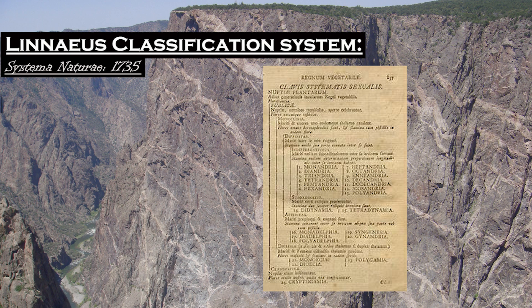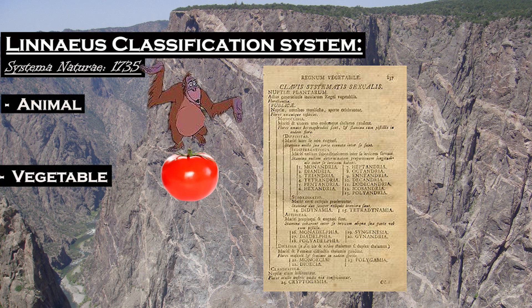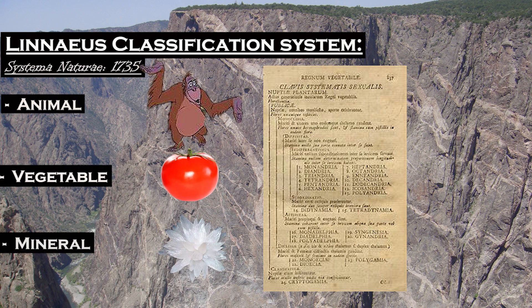The word mineral, as we know it, means different things for different times in history, cultures, languages, and more. There was once a time when humans separated everything into three kingdoms: animal, vegetable, and mineral.